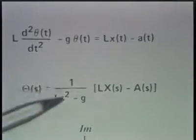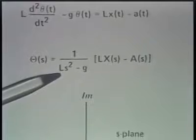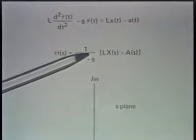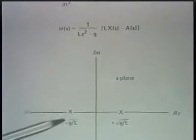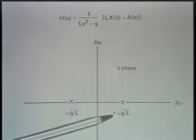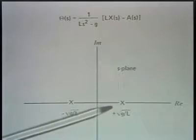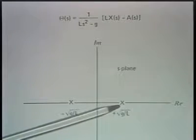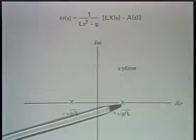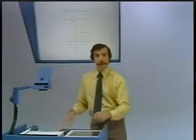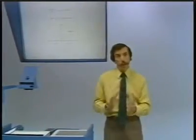We can solve for the poles and zeros. There are no zeros and two poles, since this is a second-order denominator. Looking at the poles in the s-plane, we have a pair: one at minus the square root of g over L, and one at plus the square root of g over L. The important observation is that while the left-half-plane pole represents a stable pole, the right-half-plane pole represents an unstable pole. So this system is indeed unstable — it has a pole in the right-half plane for the open-loop system.